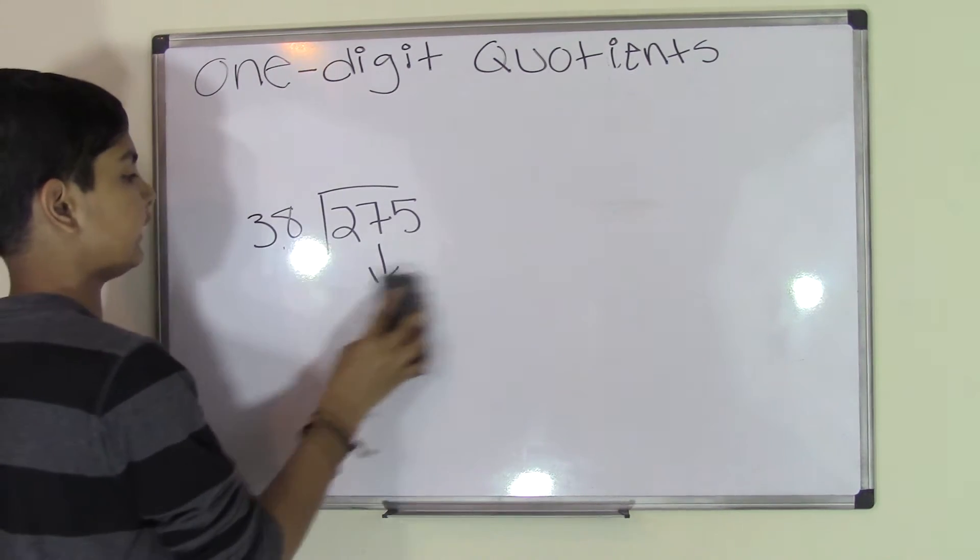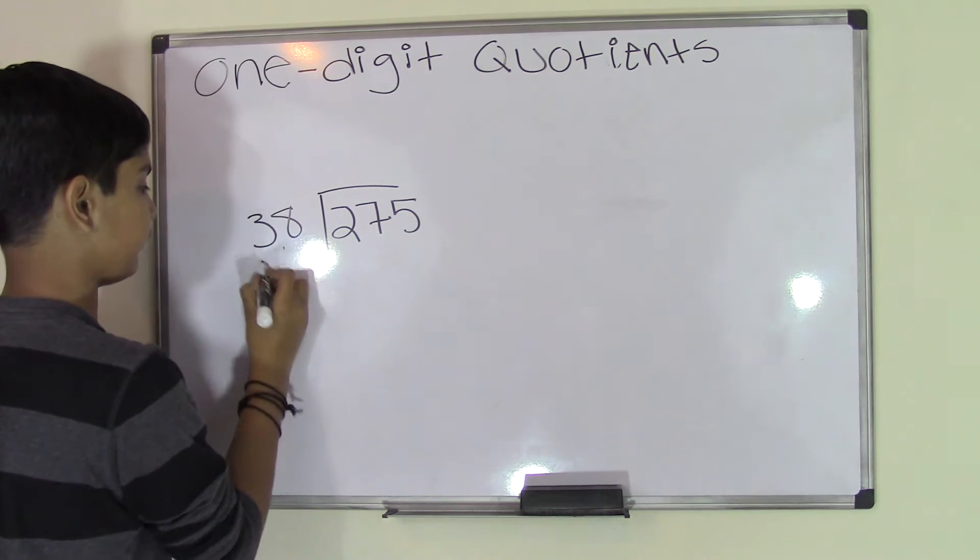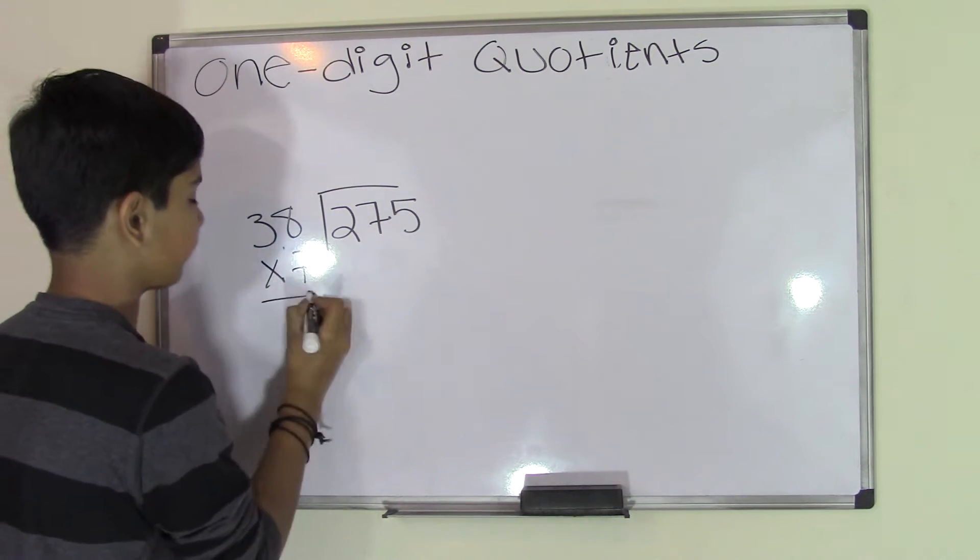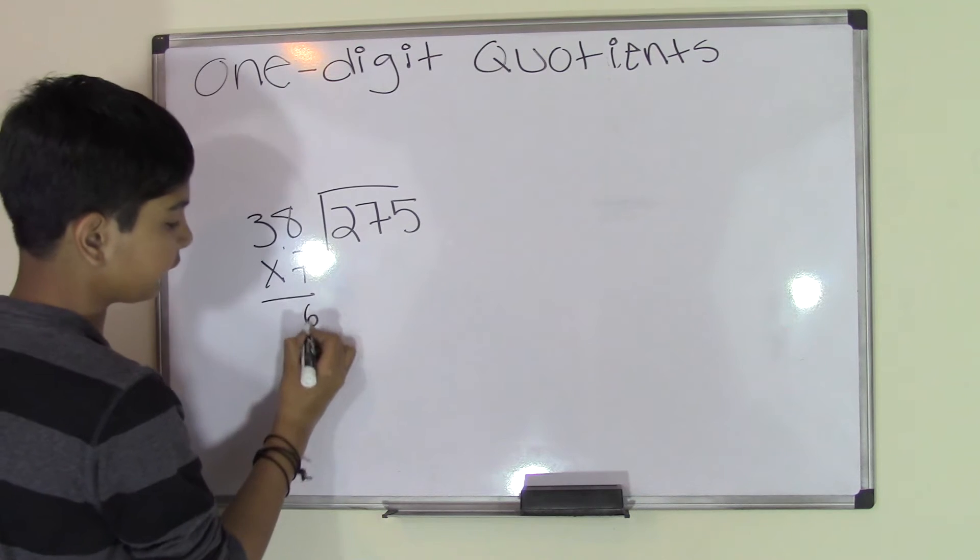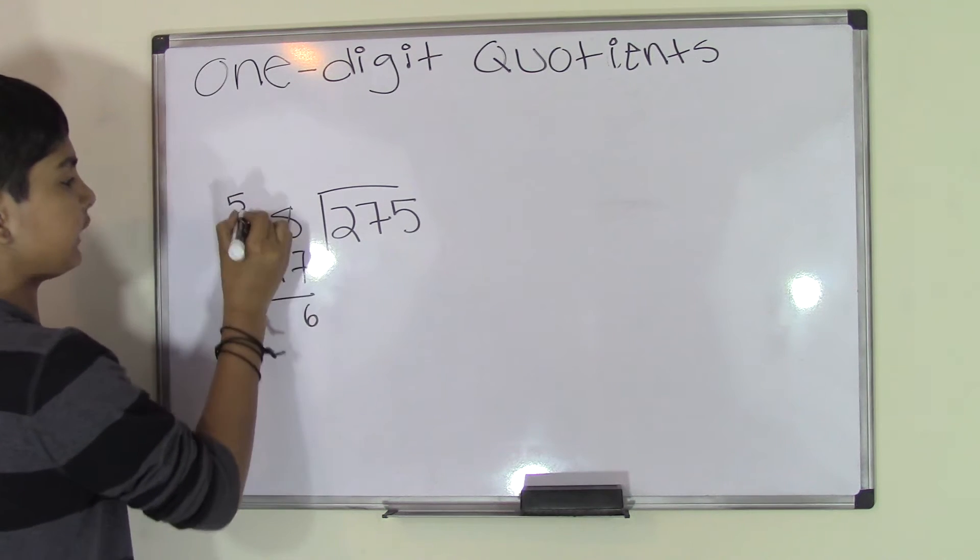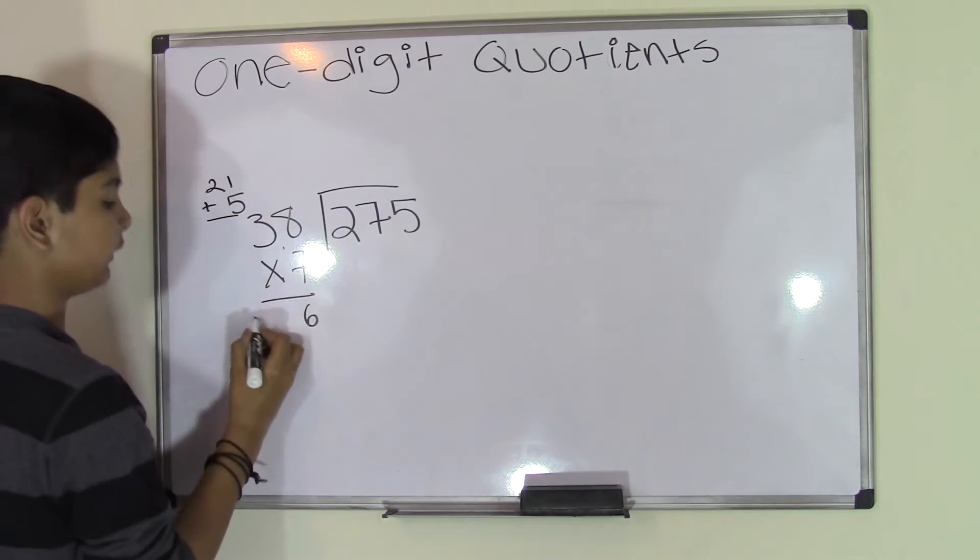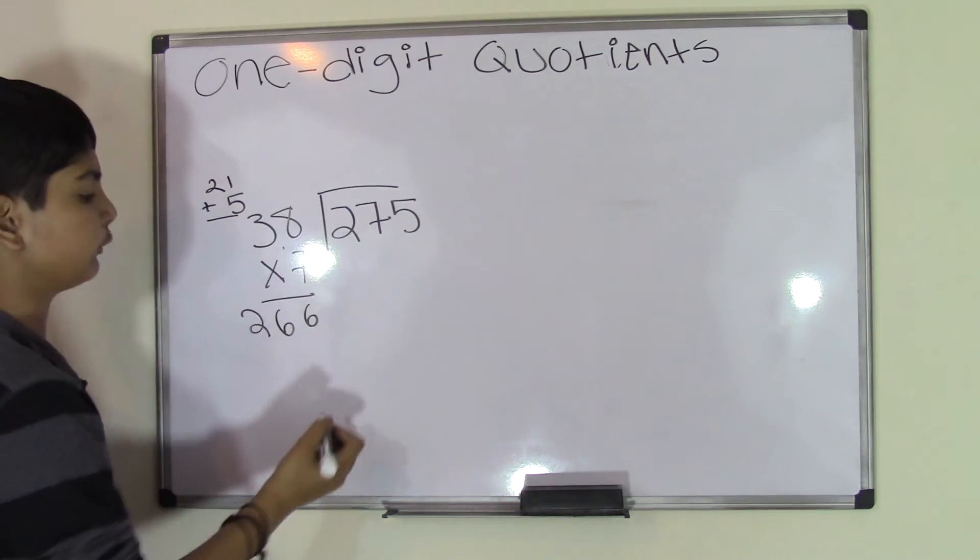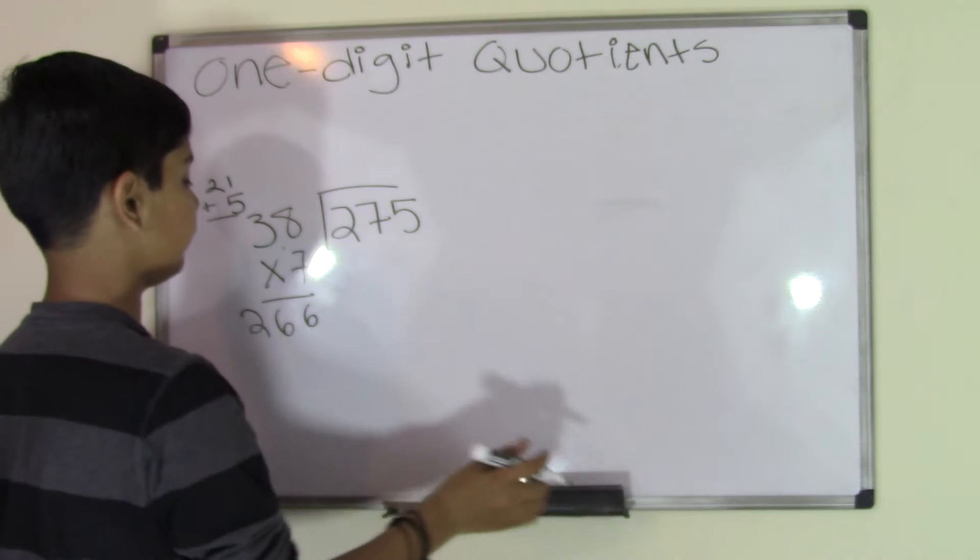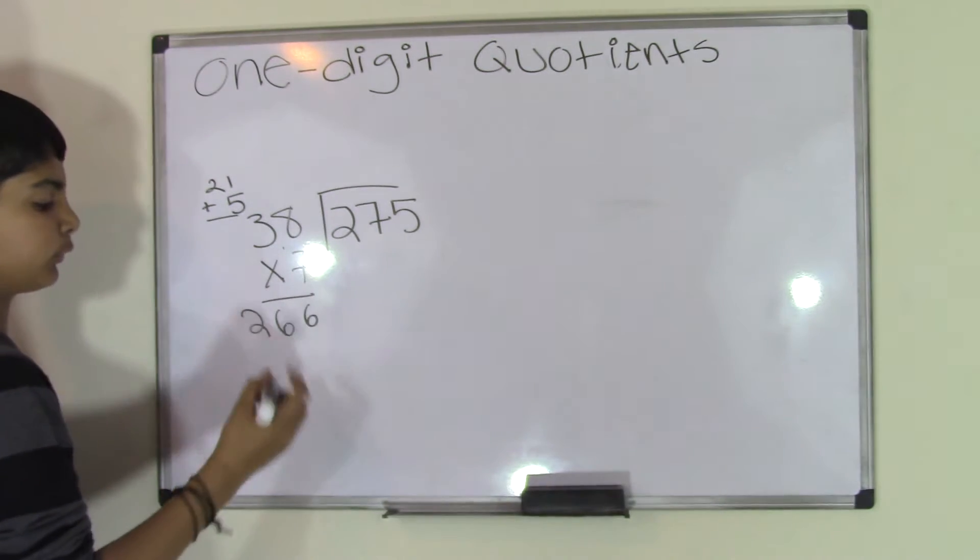So let's do 38 times 7. 7 times 8 is 56. 7 times 3 is 21. 21 plus 5 is 26, so 266. This is pretty close to 275, but I want to go one more step further to check if maybe there's a closer answer.